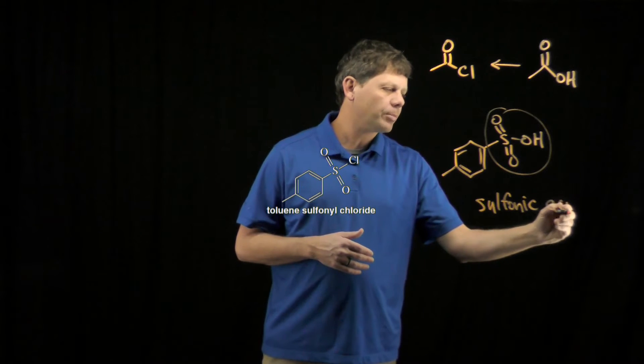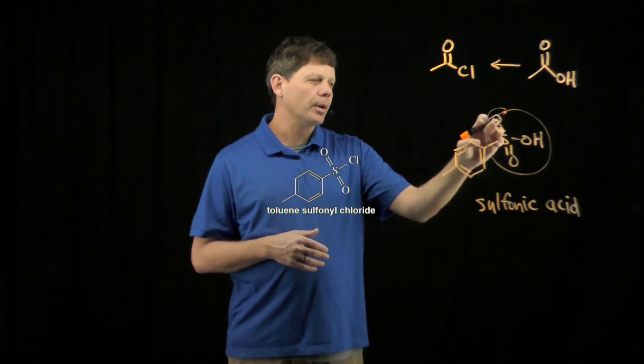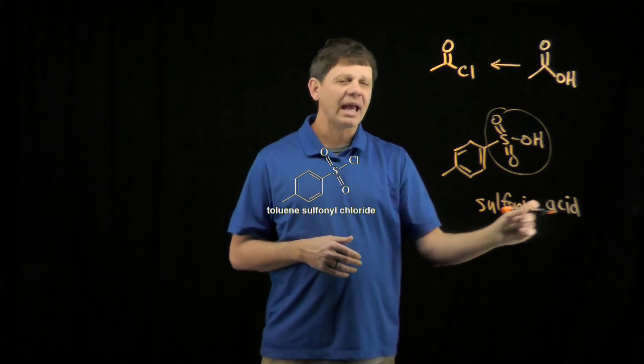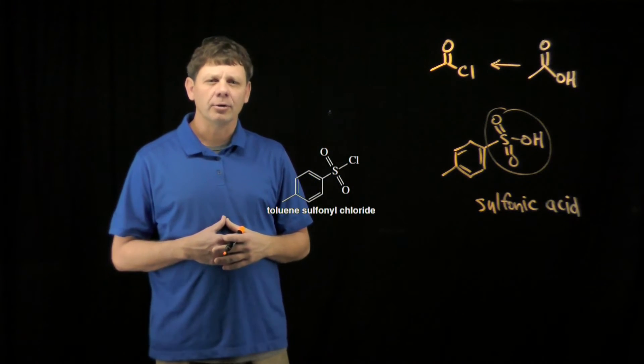The sulfonic part might be the hard part here. The S with the two double bonds to oxygen and the hydroxyl group, that makes it a sulfonic, but the acid comes from the fact that this proton can be removed to make a resonance stabilized intermediate.